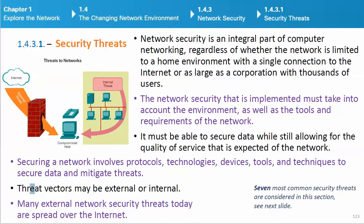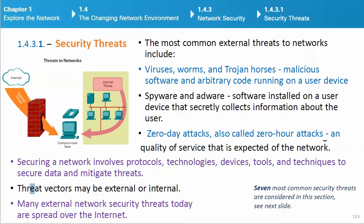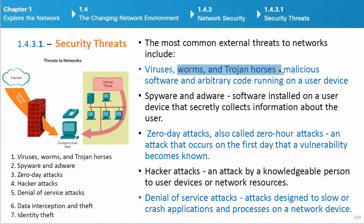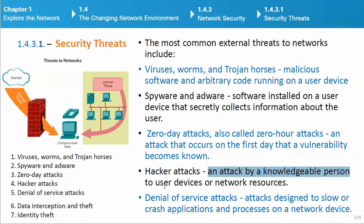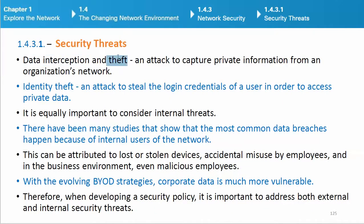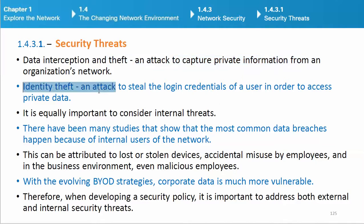Threat vectors may be external or internal. Many external network security threats today are spread over the Internet. The most common external threats to networks include: viruses, worms, and Trojan horses — malicious software and arbitrary code running on a user device; spyware and adware — software installed on a user device that secretly collects information about the user; zero-day attacks (also called zero-hour attacks) — an attack that occurs on the first day that a vulnerability becomes known; hacker attacks; denial of service attacks — designed to slow or crash applications and processes on a network device; data interception and theft; and identity theft — stealing login credentials of a user to access private data.